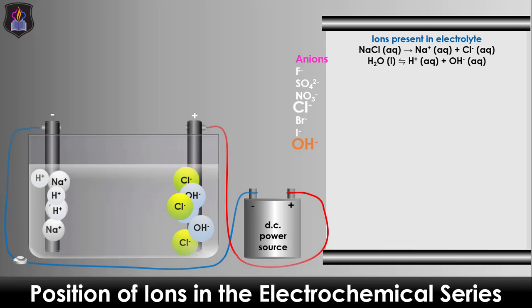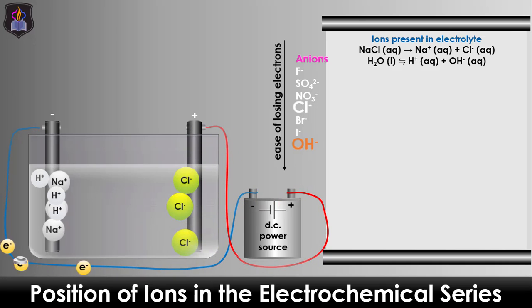The hydroxide ion is preferentially discharged due to its lower reactivity and position in the electrochemical series. The ease of losing electrons increases down the series for anions, as less energy is required by the ions to undergo oxidation or lose electrons. The hydroxide ions undergo oxidation by losing one electron each to form OH radicals.